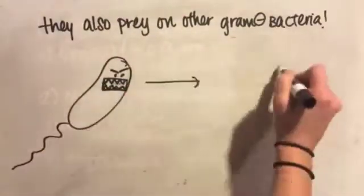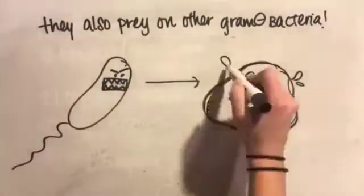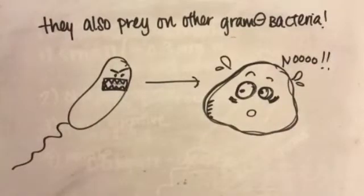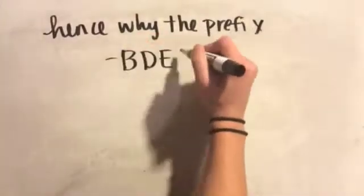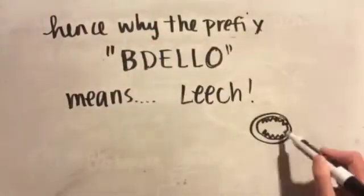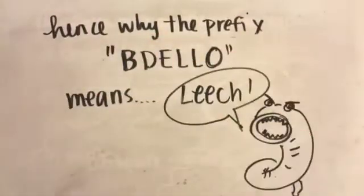They also prey on other gram-negative bacteria. Therefore, it is a parasitic symbiotic relationship with a prey bacteria. Hence why the prefix Bdello means leech.